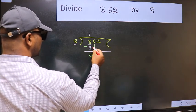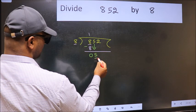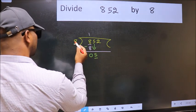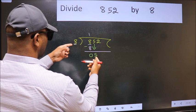After this, bring down the beside number. So 5 down. Now here we have 5 and here 8. 5 is smaller than 8.